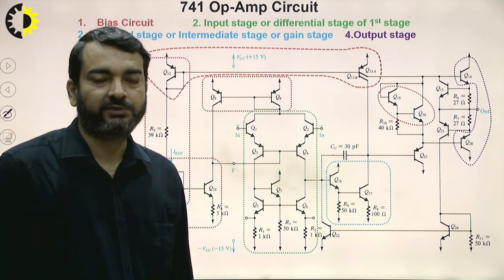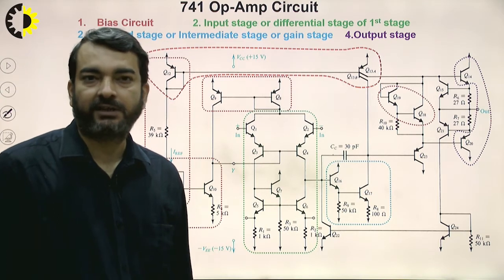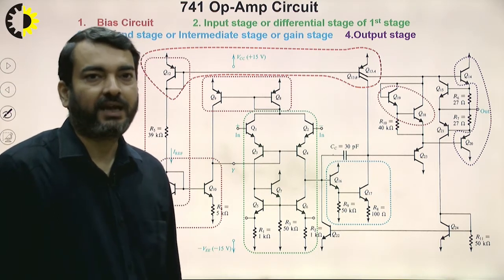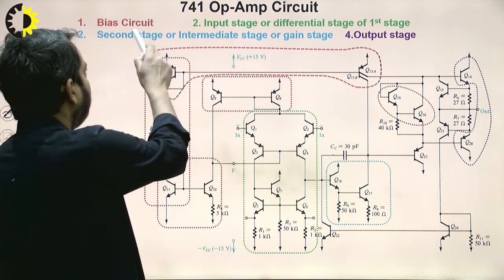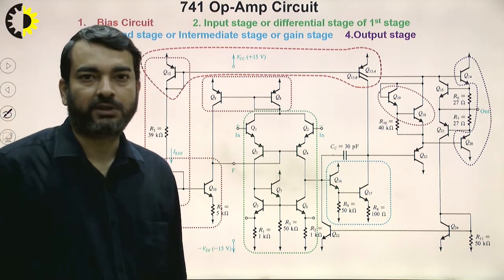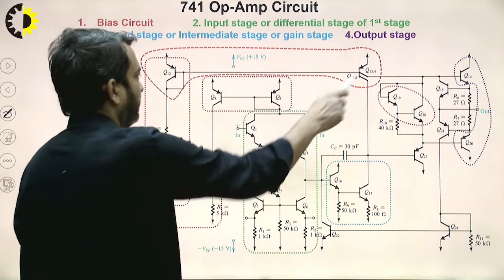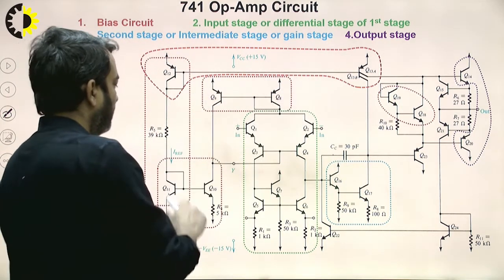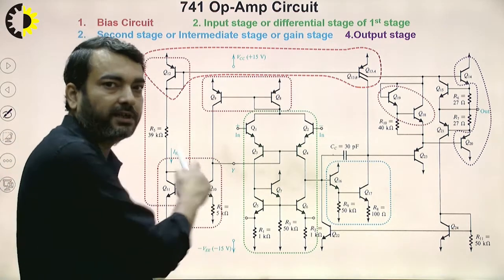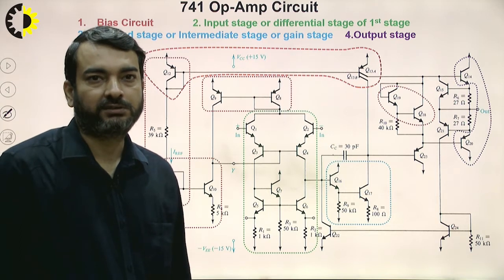In all integrated circuits there is definitely one bias circuit. The bias circuit is highlighted in red, and the corresponding blocks in this circuit are encircled in red zones. All these circuits covered in the red zone are providing bias to the circuit.